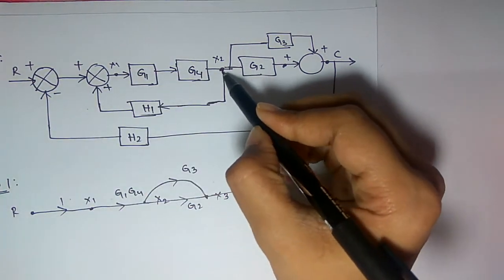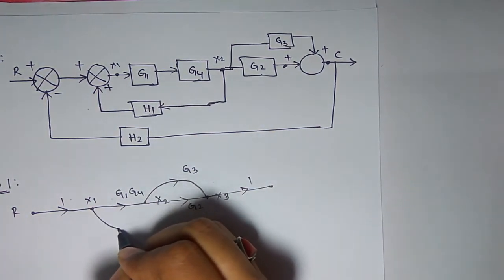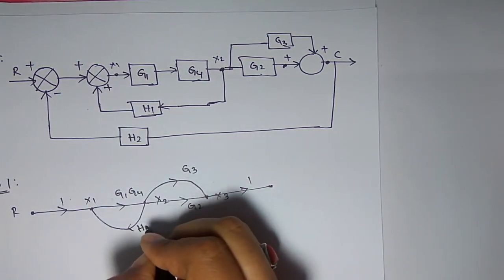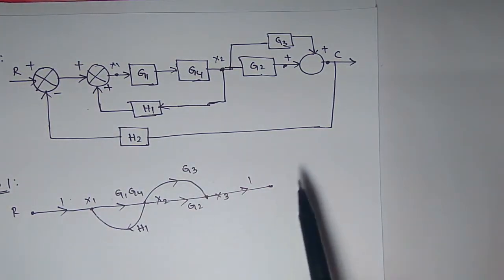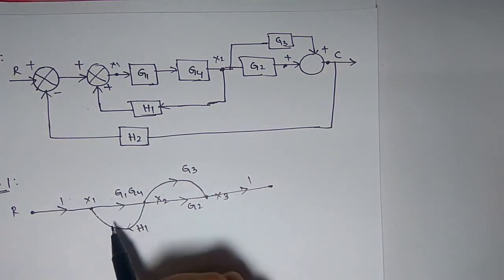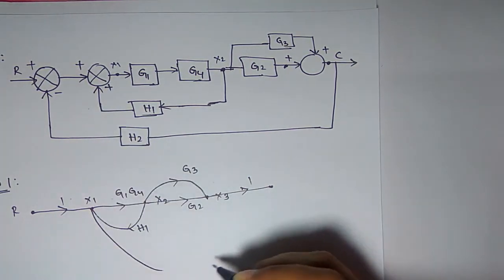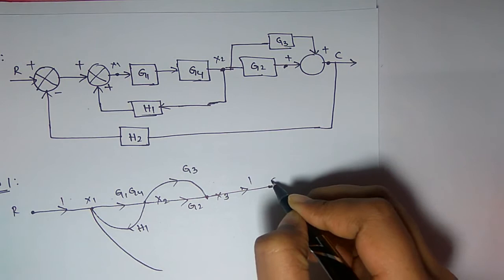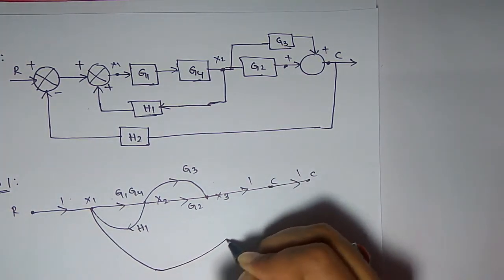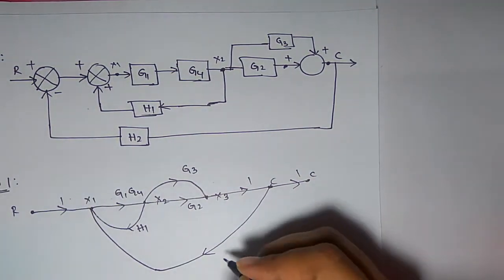X2 feeds back to E (node X1's input) with positive feedback H1. The output C connects back to X1 with negative feedback, written as −H2. The final node C connects from X3 with gain 1.